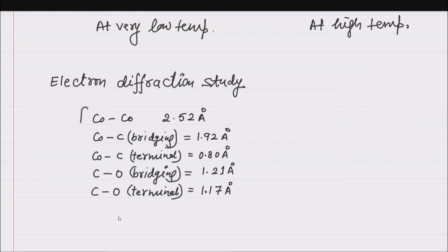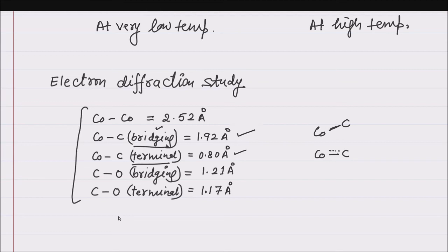As per electron diffraction study, the cobalt-cobalt bond length is 2.52 Ångströms. For cobalt-carbon bonds: in bridging, the Co–C bond is a single bond, but in terminal CO, there is back donation giving double bond character — so the Co–C bridging bond length is larger than the terminal. For carbon-oxygen bonds: in bridging there is double bond character, but in terminal there is triple bond character, though slightly less than a true triple bond due to back donation — meaning it is more than a double bond. Therefore, the C–O terminal bond length is shorter than the C–O bridging bond length.